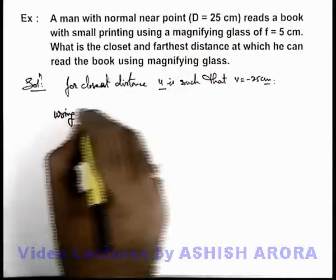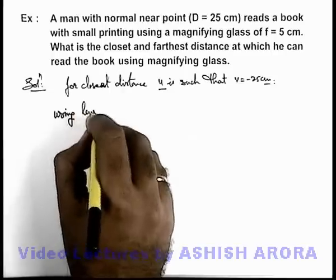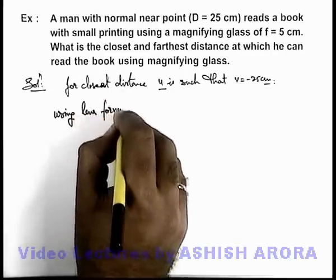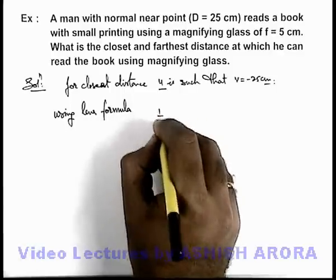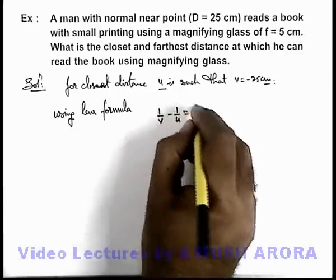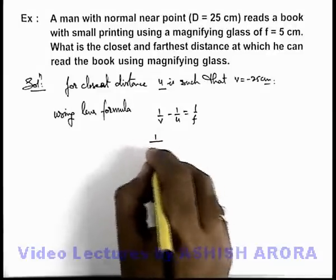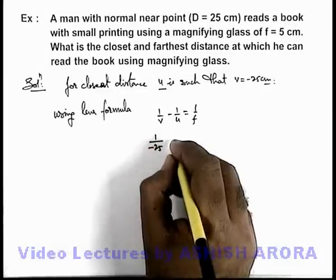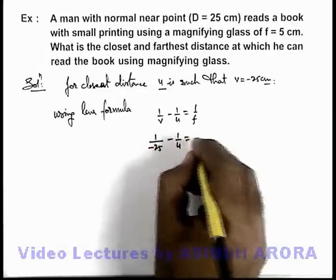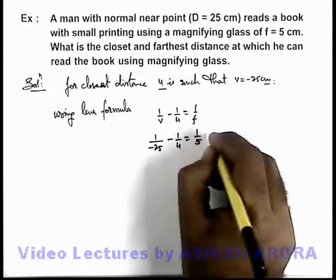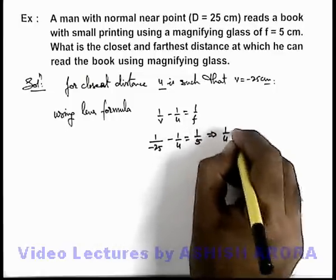So here we can calculate the value of u using lens formula, which we can write as 1/v - 1/u = 1/f. So we can write this as 1/(-25) minus 1/u. The focal length is 5, so this implies the value of 1/u we are getting is -1/25 minus 1/5.